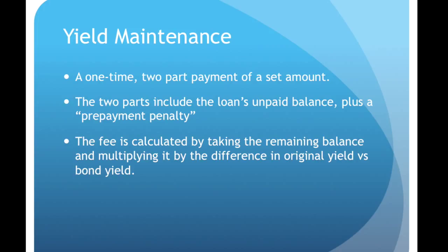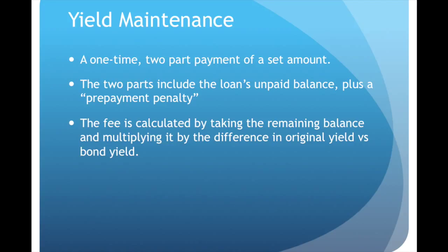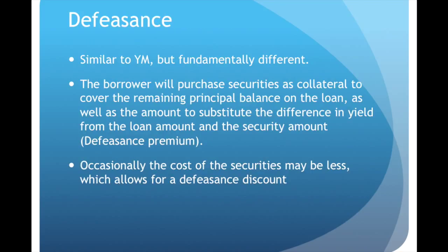The prepayment penalty is where yield maintenance and defeasance differ. That fee is calculated by taking the remaining balance and multiplying it by the difference between the original yield and the bond yield you could get from purchasing securities, such as US Treasury bonds. For example, if your interest rate was four percent and the current US Treasury yield for the remaining term was two and a half percent, you'd pay a fee of one and a half percent times your remaining principal balance. The total cost of yield maintenance is that percentage times the principal balance, plus whatever principal balance remains.